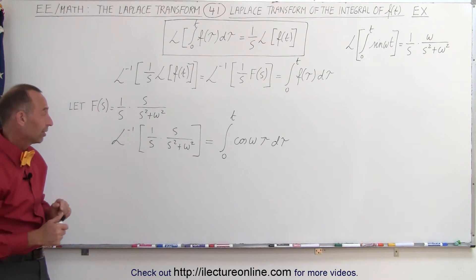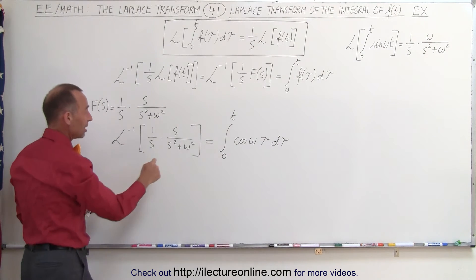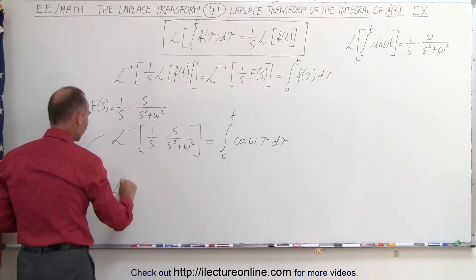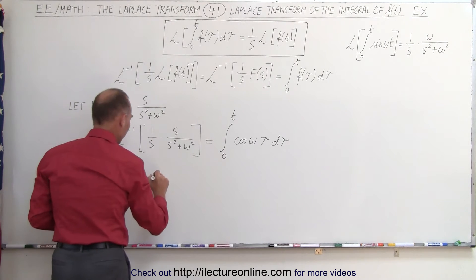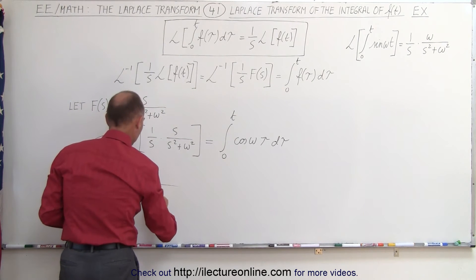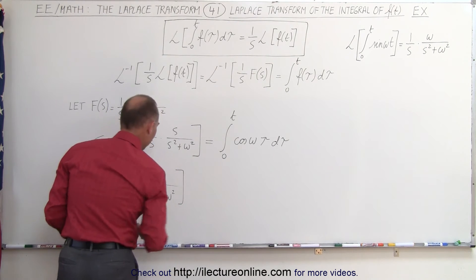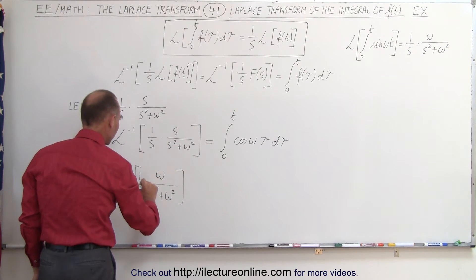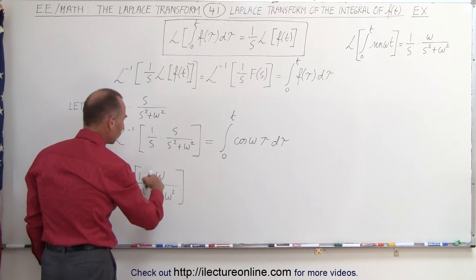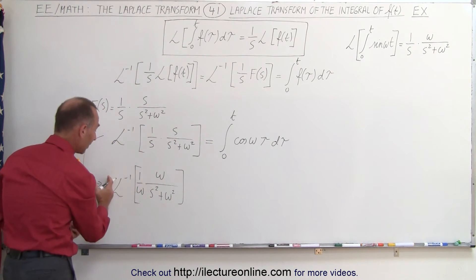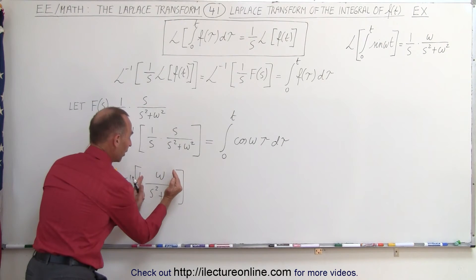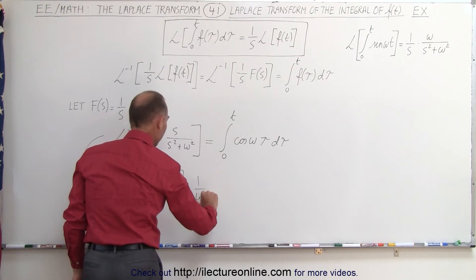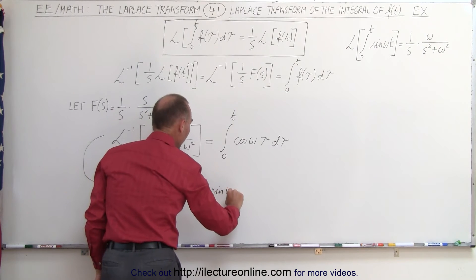Now to show how that really works, let's simplify. We can cancel the s in the numerator and the s in the denominator, so this can be written as the inverse Laplace transform of 1 over s squared plus omega squared. To use the known transform pair, we insert omega in the numerator and multiply by 1 over omega outside. Taking the inverse Laplace transform of omega over s squared plus omega squared gives sine of omega t, so the result is 1 over omega times the sine of omega t.